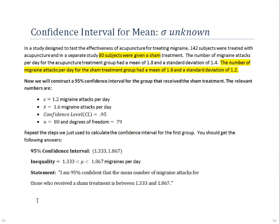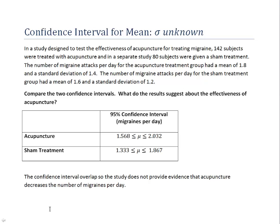Now let's address the original question: does acupuncture really reduce the mean number of migraine headaches? Looking at the two 95% confidence intervals — 1.568 to 2.032 for the acupuncture group and 1.333 to 1.867 for the sham group — those two intervals overlap quite significantly. Because they overlap, the study doesn't provide any evidence that acupuncture actually decreases the number of migraines per day. The data does not support the claim that acupuncture reduces the mean number of migraines per day.